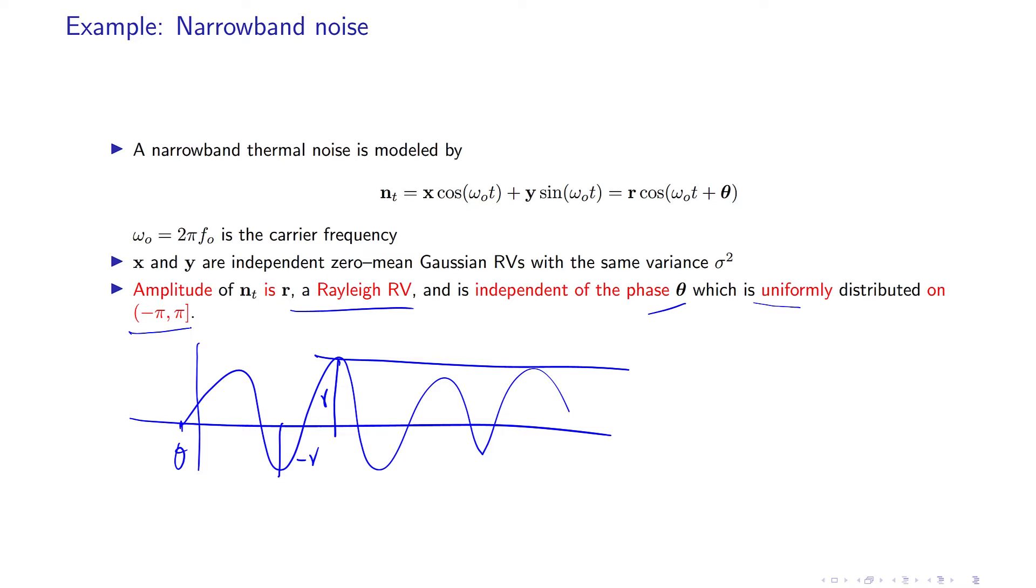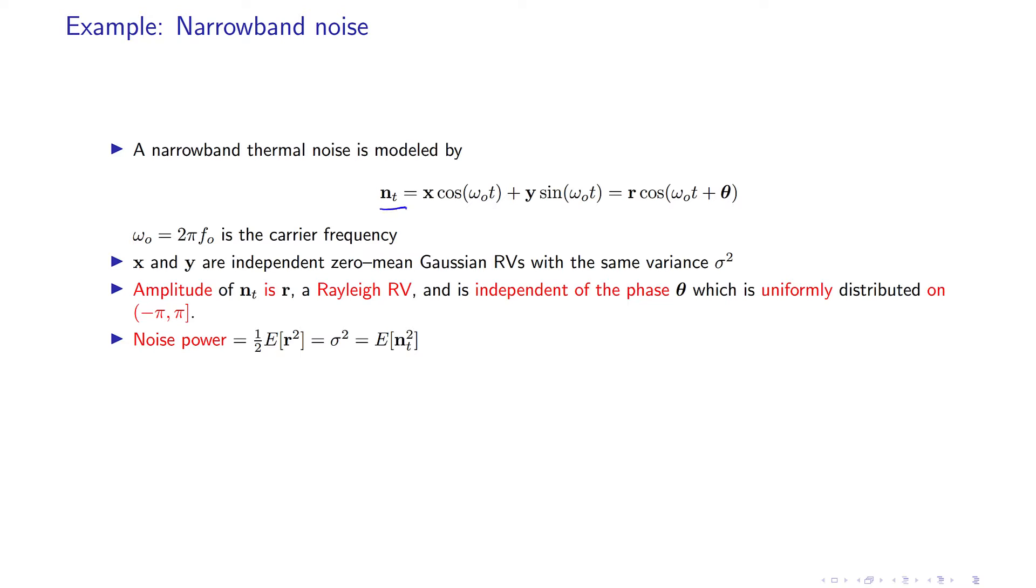So we can quickly show that noise power, if you calculate the mean of n(t)^2, you can easily show that this is equal to one half of the mean of r^2, and is equal to σ^2, which is the variance of x and also equal to the variance of y.